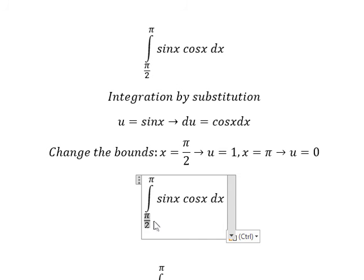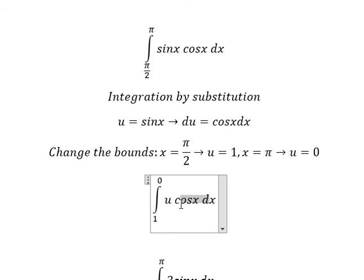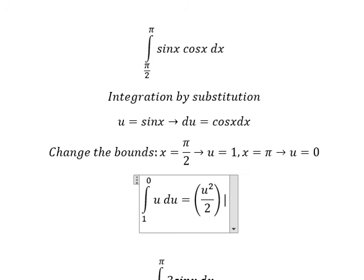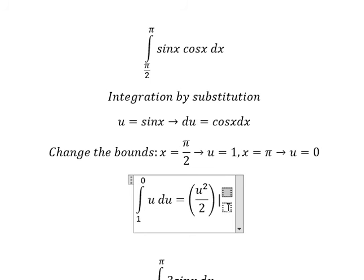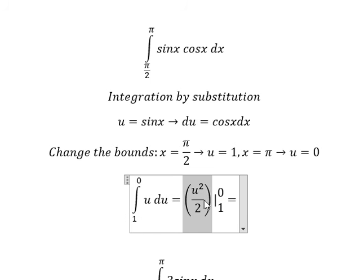This bound is number 1, this one is number 0. Sine x we change by u, cosine x dx we change by du. The integration of u gives us u squared over 2. I will put the bounds from 0 to number 1, or from 1 to number 0.